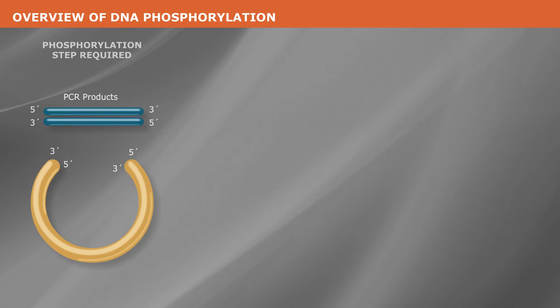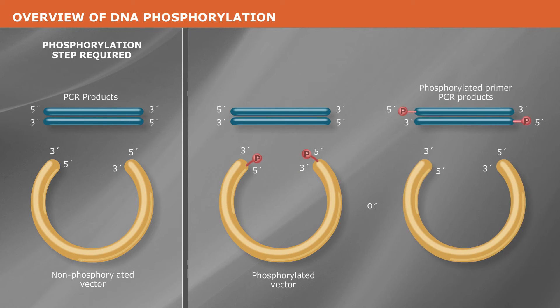PCR products need to have a 5'-phosphate added before ligation is attempted with a non-phosphorylated vector. If the vector is phosphorylated, or the PCR products were generated with phosphorylated primers, no phosphorylation step is needed.